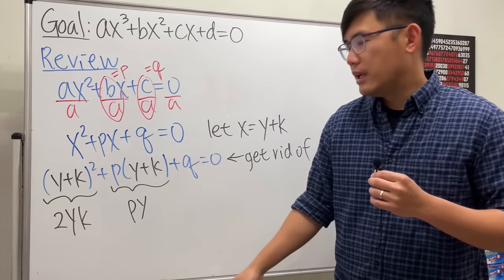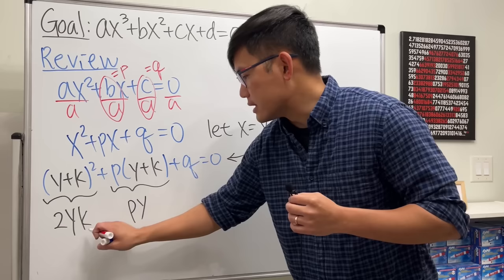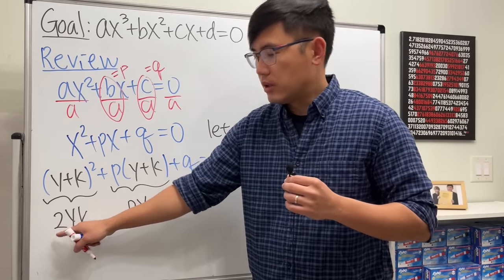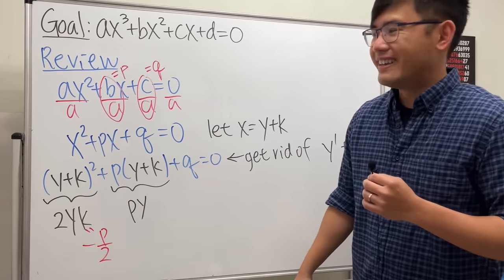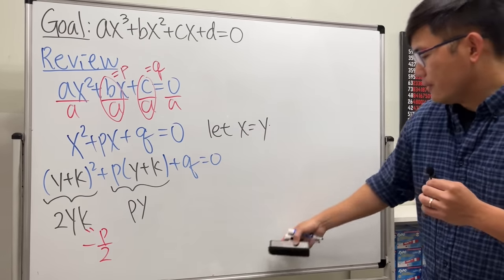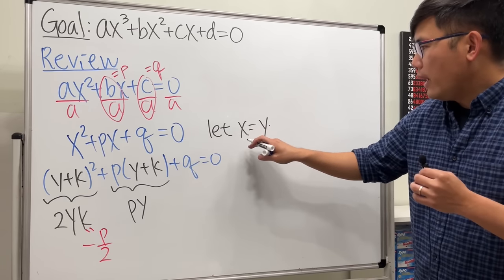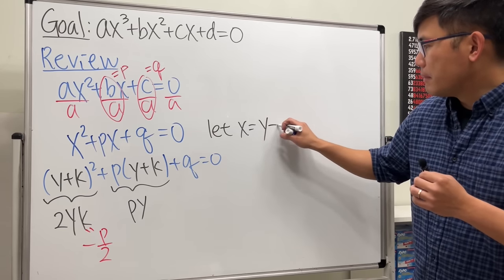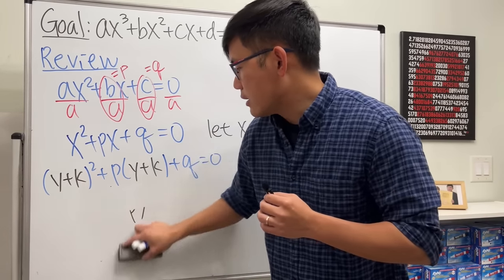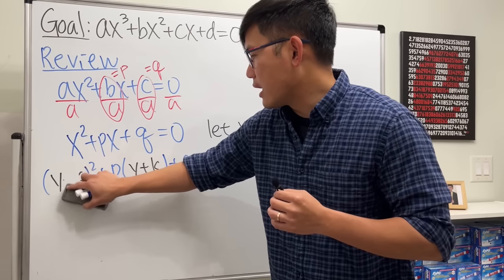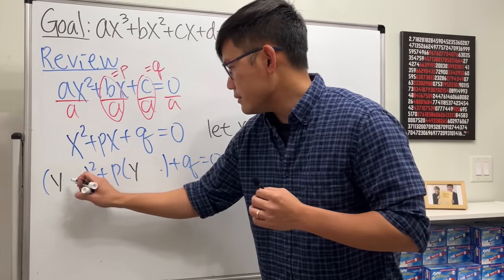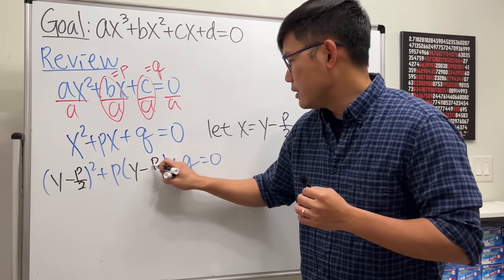Our goal is to find out what k will cancel out these two terms. Both of them are positive, so k should be negative. We have p here and 2 here, so k = -p/2. That will work. So we are going to let x = y - p/2.